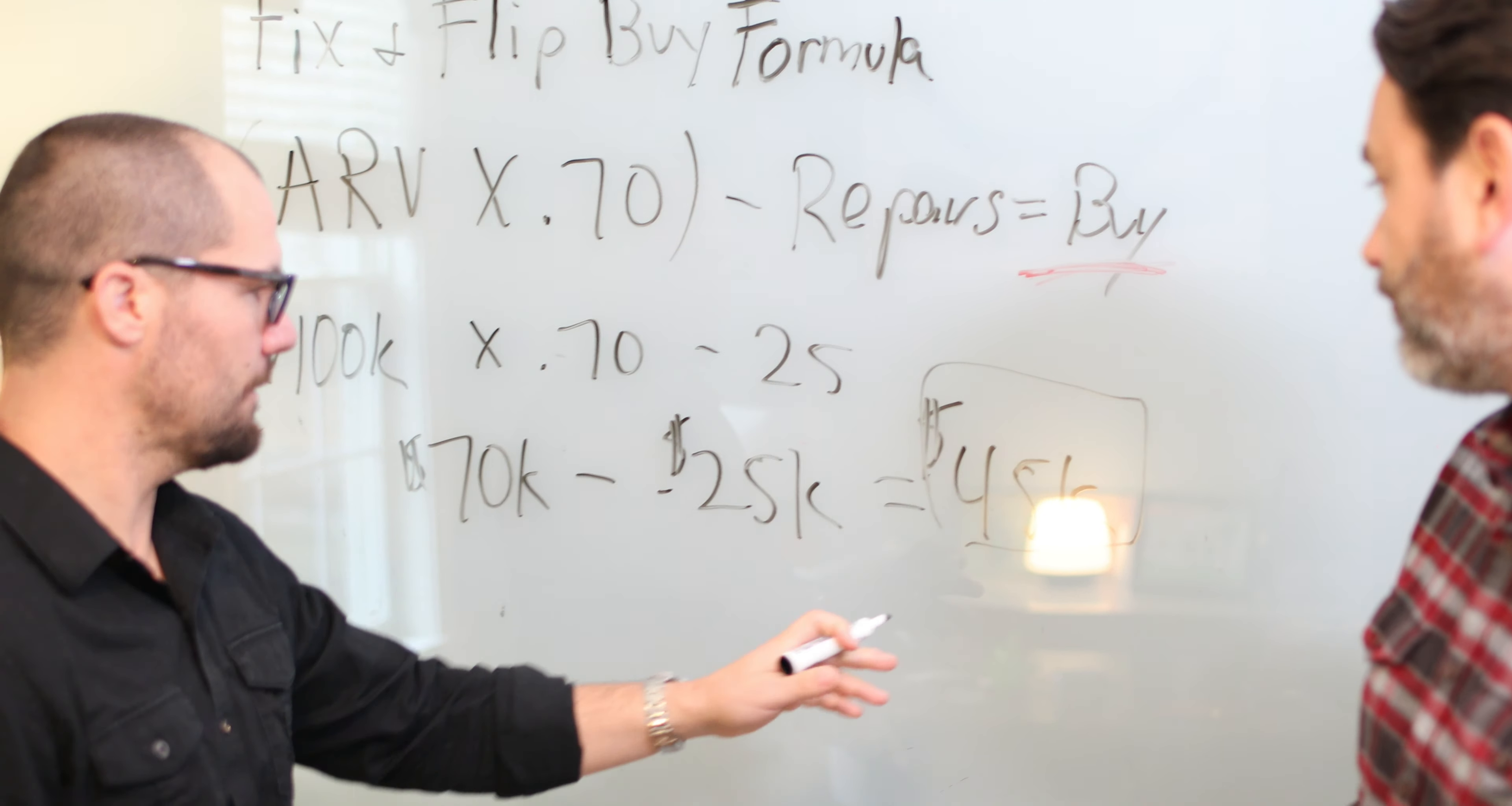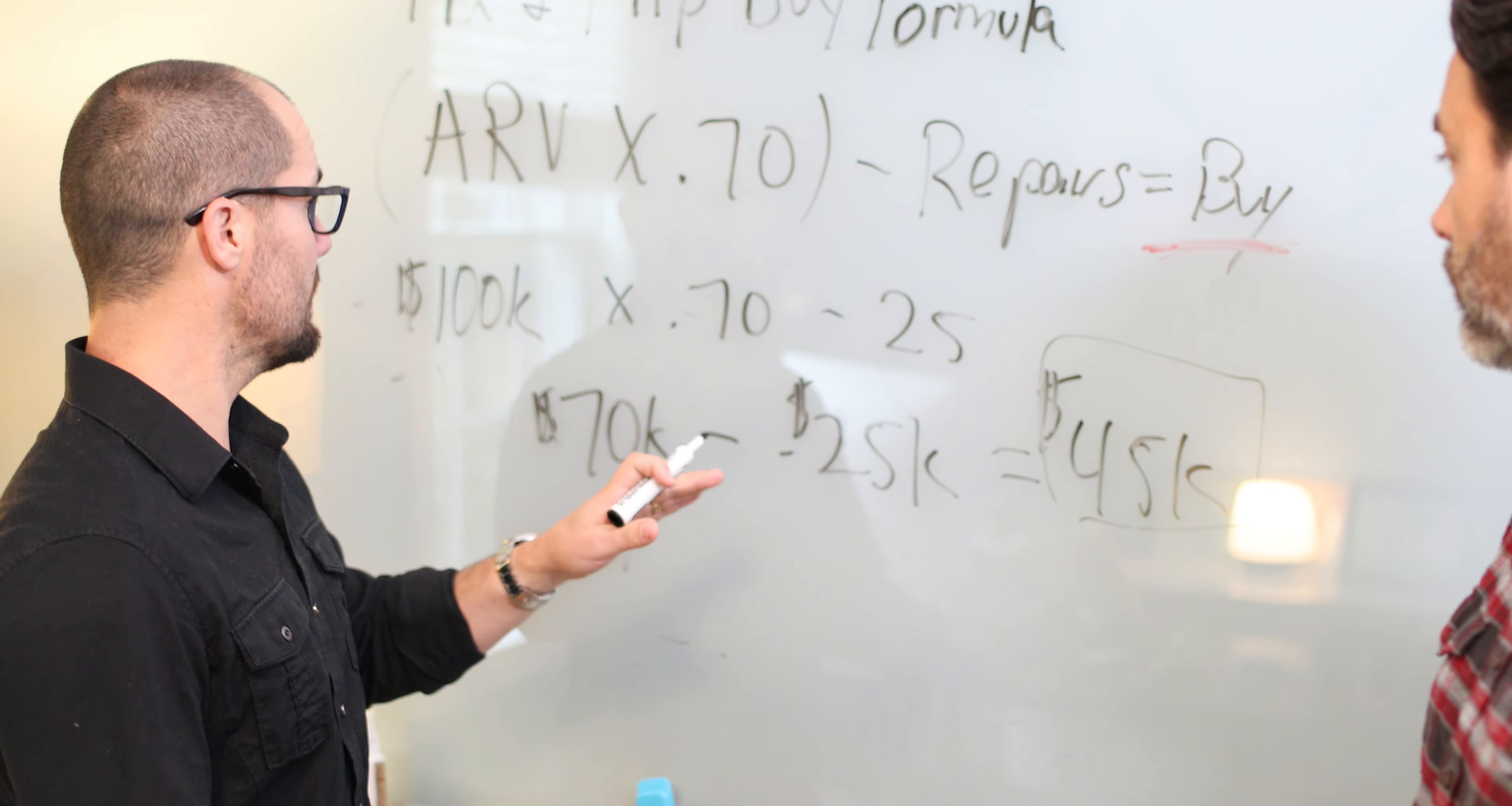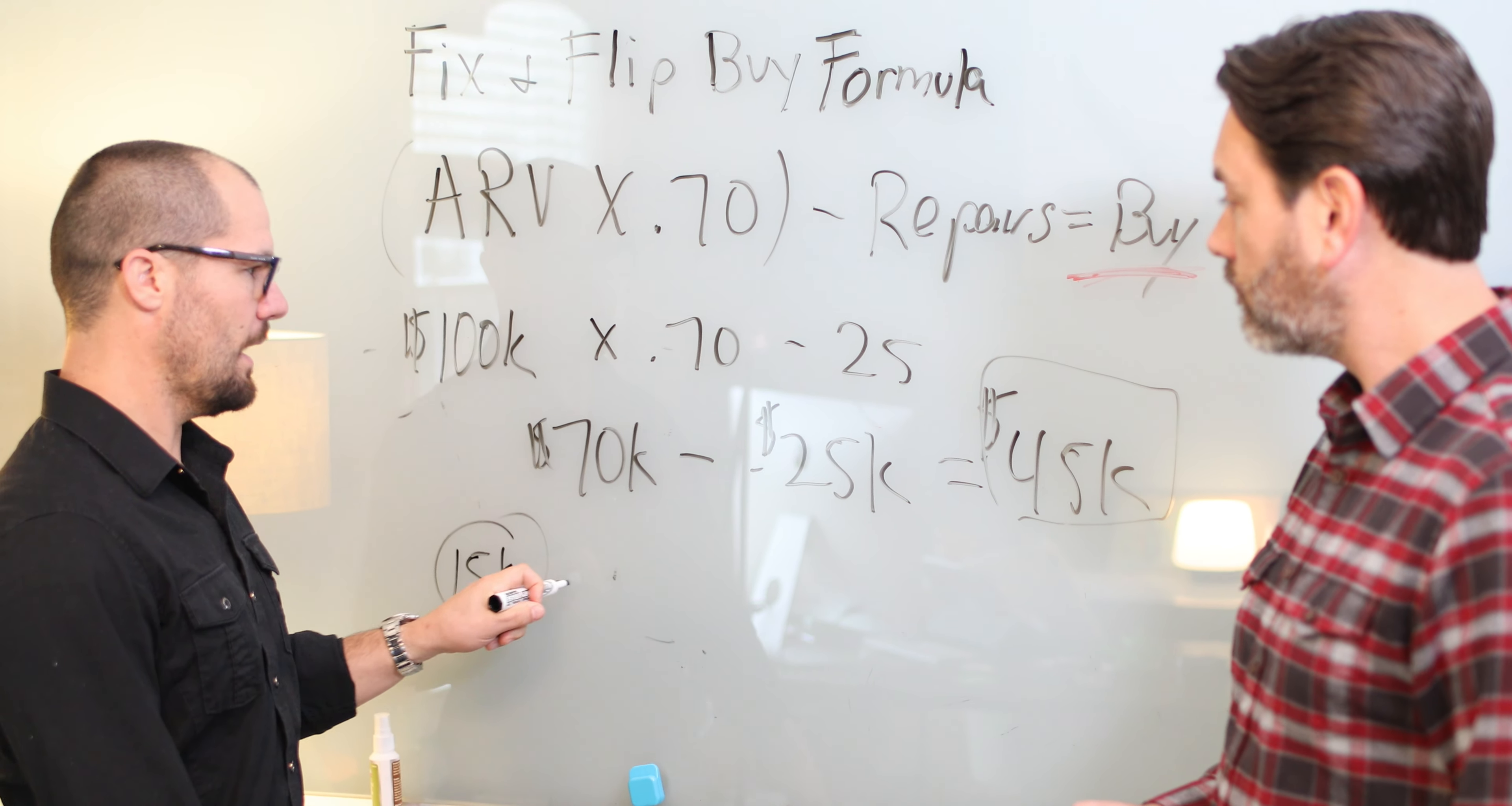So at this price, if a fix and flipper bought it for $45,000, they would have to pay—9% of that would be going towards your closing costs, commissions, title insurance, transfer tax, prorations, all those fees you pay, right? 6% of that is your cost of money because we borrowed, we borrowed $45,000 plus $25,000, right, to fix this house up. So that goes to that. 15% of that, which would be, you know, $15,000 would be our profit on that deal.